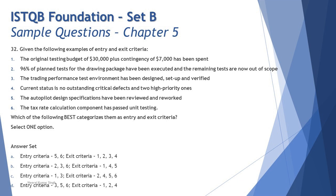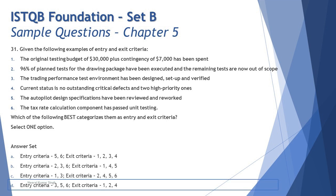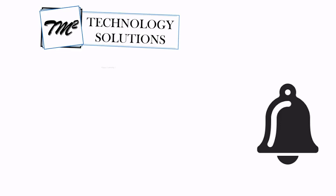We don't need two separate documents to manage them. Criterion 6 is entry criteria to integration testing — it's not saying 'can we stop component testing,' it's saying 'component testing has completed so integration testing can begin.' Combining everything: 1 is exit, 2 is exit, 3 is entry, 4 is exit, 5 is entry, 6 is entry. The right answer is D: entry criteria — 3, 5, 6; exit criteria — 1, 2, 4.